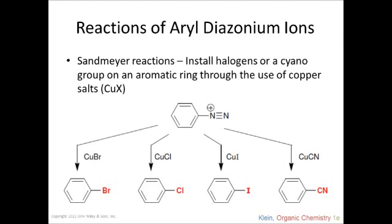Now that we have an aryl diazonium ion, we can have it undergo a variety of different reactions. One of the main reactions it can undergo is called the Sandmeyer reaction. It takes a copper salt — consisting of a copper ion with a halogen or cyano group — and reacts it with an aryl diazonium ion, replacing the diazonium group with the said halogen or cyano group. As you can see from the slides, you get different substituted benzenes depending on which copper salt you use.